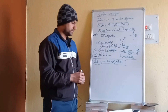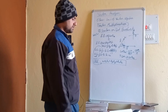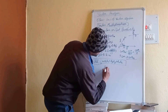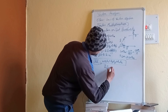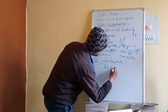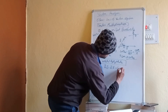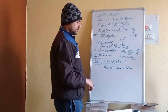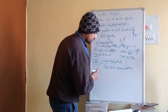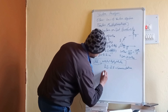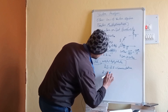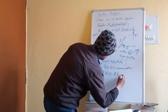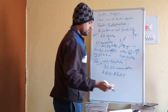The dot product is always commutative and distributive. The distributive law states that A · (B + C) = A·B + A·C.